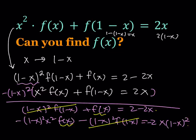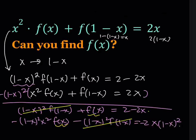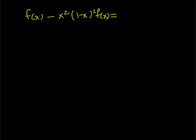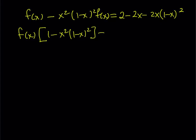So I'm getting f of x minus x squared times 1 minus x quantity squared times f of x equals, and from here I should be getting something like 2 minus 2x minus 2x times the quantity 1 minus x quantity squared. So here we can just take out f of x, and if you do, we get 1 minus x squared times the quantity 1 minus x squared.